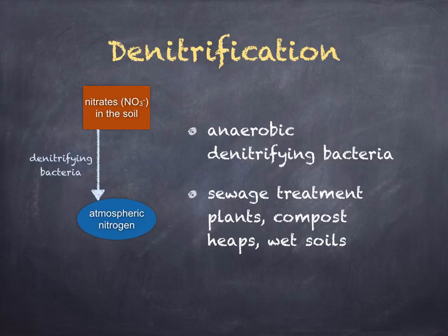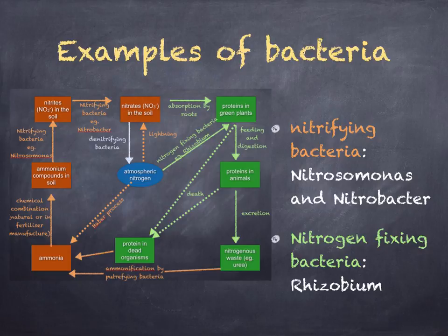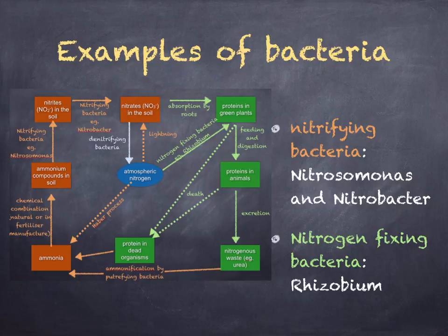Denitrification requires denitrifying bacteria and anaerobic conditions. Examples of important bacteria in the nitrogen cycle include nitrifying bacteria — nitrosomonas and nitrobacter — which convert ammonia in the soil to nitrite ions and nitrate ions. Then you've got nitrogen-fixing bacteria, for example rhizobium, found on root nodules, which convert nitrogen gas into ammonium compounds.